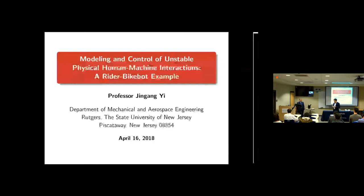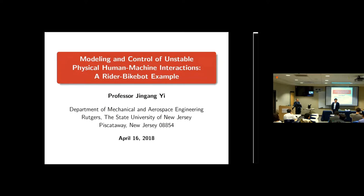As a brief background, Jinggang received his bachelor's degree from Zhejiang University, then a master's degree from Tsinghua University, and another master's degree in mathematics from UC Berkeley, followed by a PhD degree in mechanical engineering. He's currently very active in societal service programs and as an associate editor for many important journals. He's also been a great mentor to his students, co-authoring many best student papers in IEEE and ASME conferences, and ICRA as well.